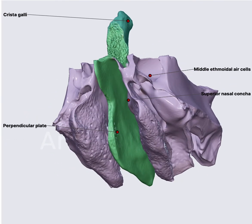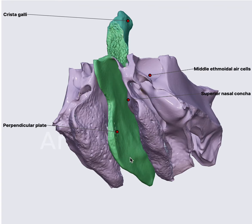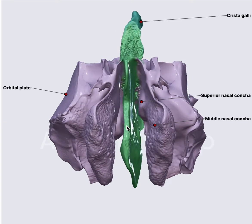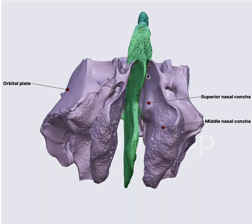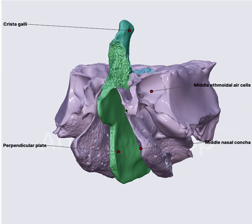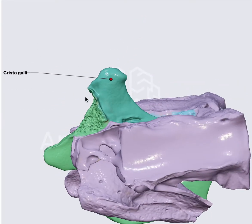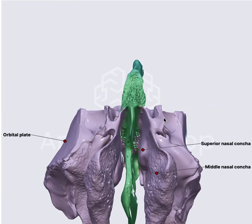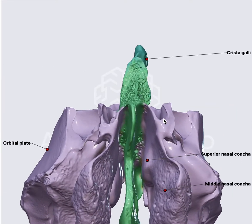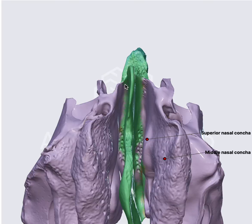Looking at the perpendicular plate — it is situated in the sagittal plane. It forms the posterior nasal septum and it has a structure called the crista galli. The crista galli provides attachment to the falx cerebri. Whenever we are doing endoscopic craniotomy or craniofacial resection, we need to excise this area.